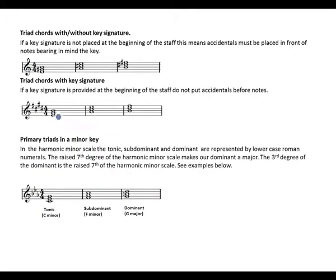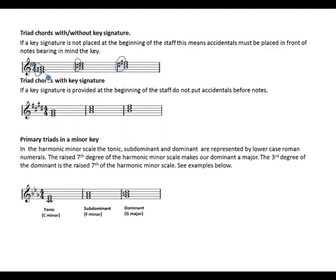Triads with or without key signatures: if a key signature is not placed at the beginning of the staff, put accidentals before the notes. In this example the key signature is not present, so an accidental is placed before the notes. Looking at our triads, the first note is E as the tonic, then we have G sharp as our mediant.